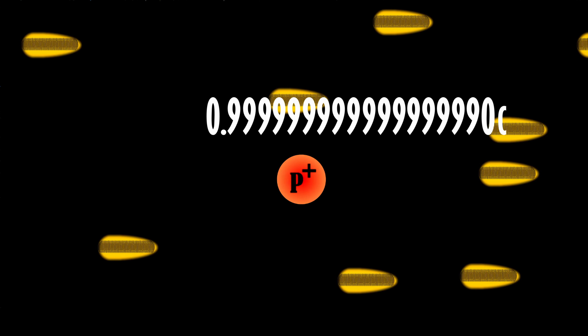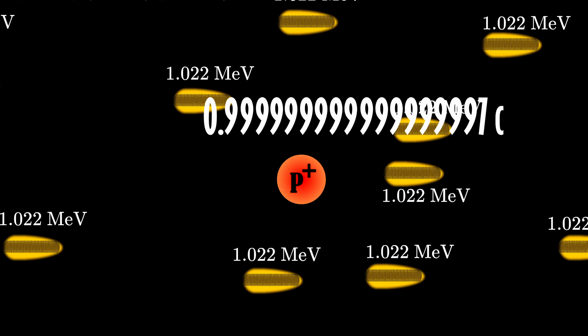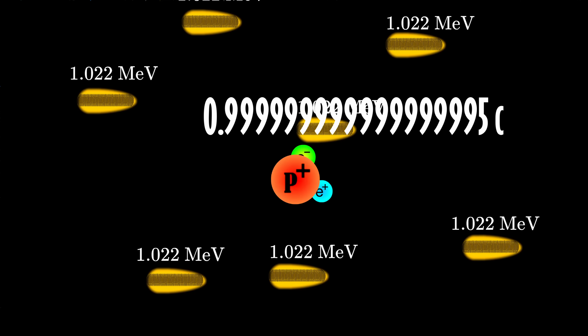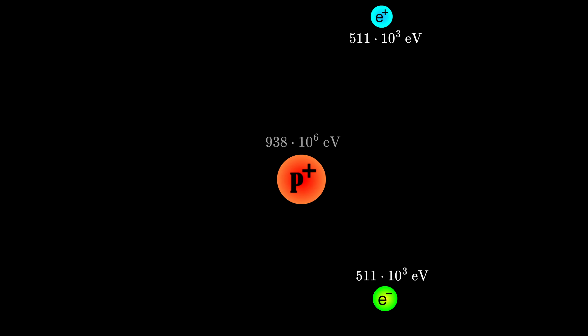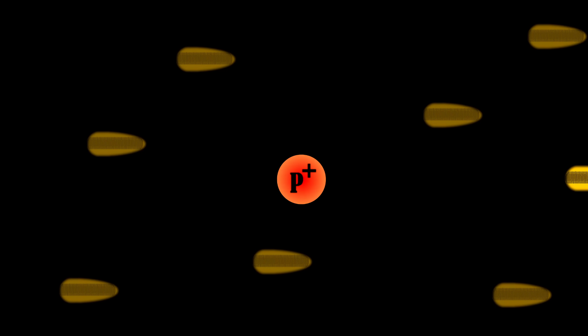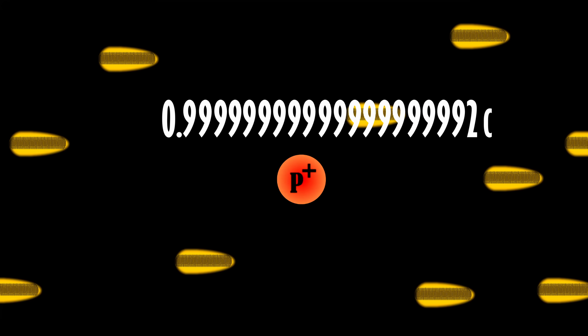At a certain velocity, the energy of the CMB photons becomes high enough that there is a possibility of electron-positron pair creation in the presence of the proton. As a side note, a photon on its own can't decay into an electron-positron pair due to momentum conservation; it can only happen near a third body so that momentum can be transferred to it. The electron and positron are very light compared to the proton, so this process doesn't drain much energy from it, and the proton can be accelerated further without losing much energy.